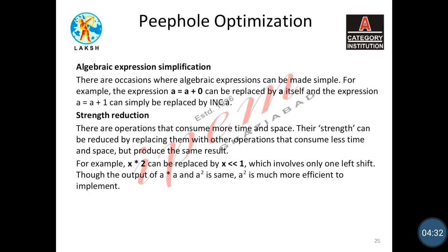Instead of jumping to L1 and then L2, the control can directly reach L2 as shown in the optimized code. This is flow of control optimization. The next technique is algebraic expression simplification. We can simplify algebraic expressions — for example, a equals a plus zero can be replaced by simply a, or a equals a plus one can be replaced by increment a.